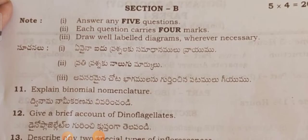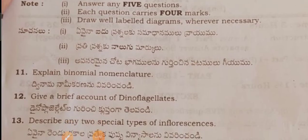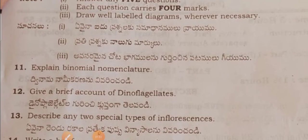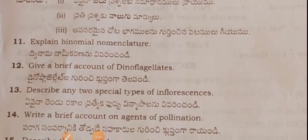In Section B questions, they will give ten questions, out of which you have to attempt any five. Sorry — they will give eight questions, out of eight you have to attempt any five. Each question carries four marks.